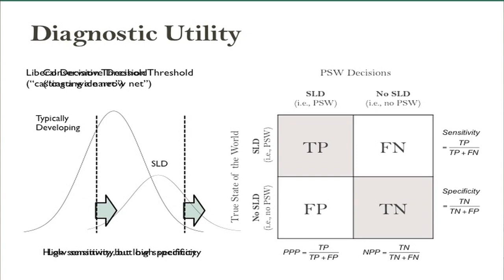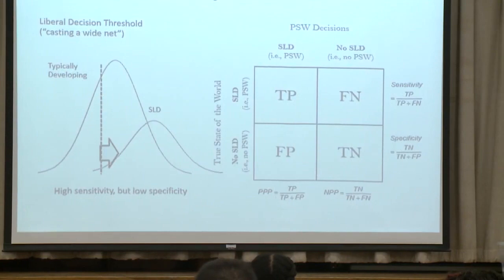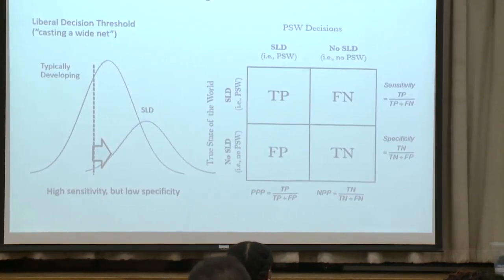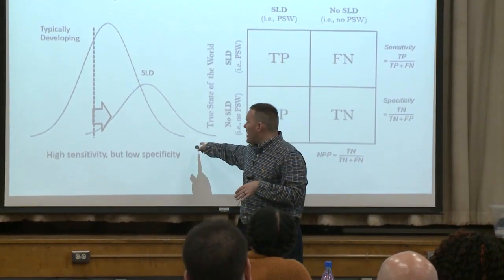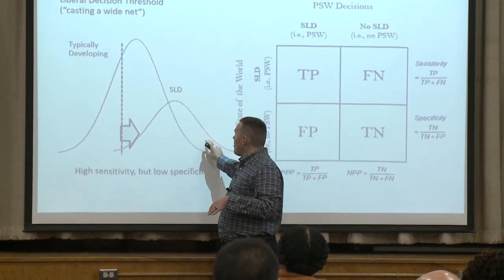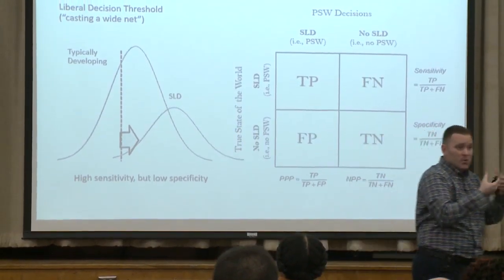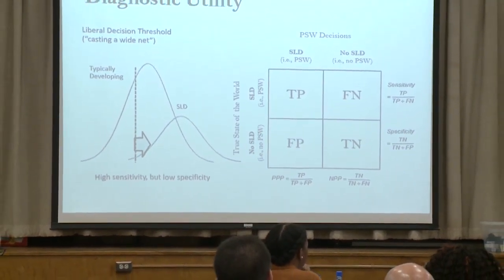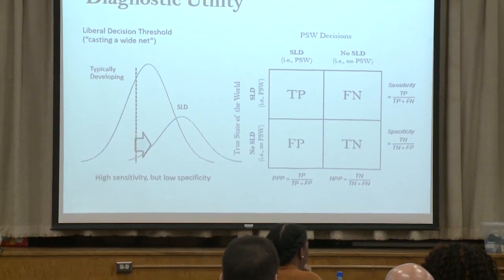When we make a decision, we can decide to cast a wide net — I want to capture as many kids as possible. But when we do that, there's always a decision to be made: where am I going to cut the line? What type of error am I going to find acceptable? Nothing is going to be perfect. We're identifying SLD, and there's going to be a lot of overlap between LD and normal kids. I can minimize or extend that overlap depending on where I put the decision-making threshold.